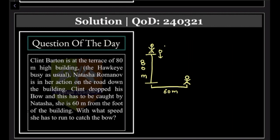Dropping means initial velocity is equal to 0. With what speed does she have to run to catch the bow?